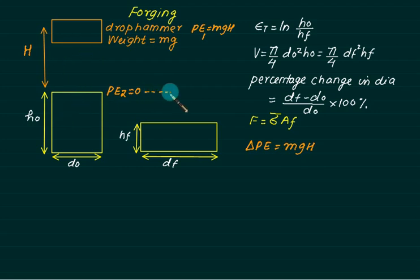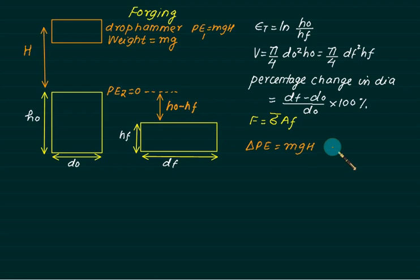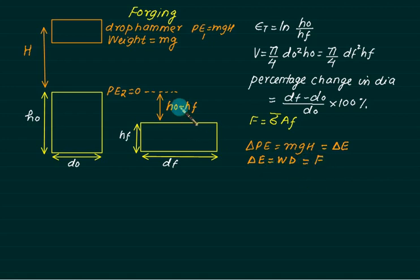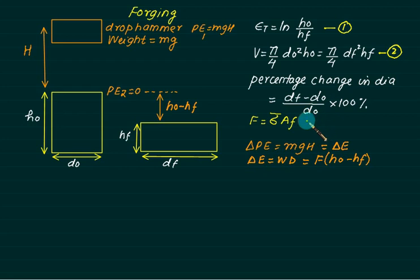As far as the job is concerned, it changes height by H0 − HF. We apply force F equal to σ̄ × A_final over the distance H0 − HF. This gives the change in energy. By the first law of thermodynamics, work done equals force multiplied by distance change (H0 − HF). This energy equals MGH — these are the four key formulae.